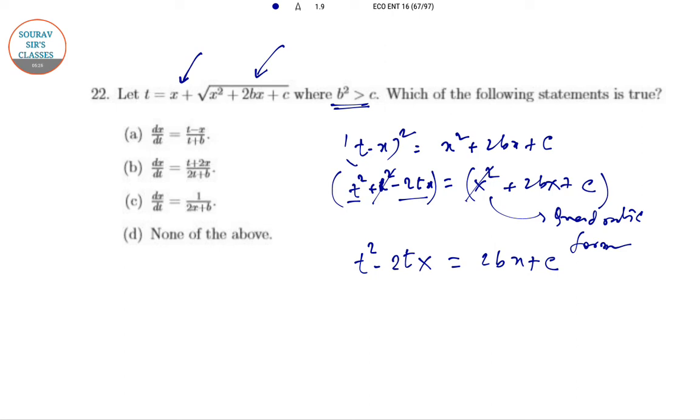Differentiating the equation: the left side gives 2t, and the right side gives 2t(dx/dt) + 2b(dx/dt). So: 2t = (2t + 2b)(dx/dt), which we can solve for dx/dt.